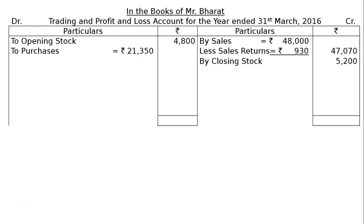Here we go to adjustment six: during the year, machinery was purchased for Rs. 2,000 but it was debited to purchases account. Hence from purchases we have to deduct machinery, and we have to add machinery in the balance sheet to the machinery balance already appearing in the trial balance. Then out of that total, we have to calculate depreciation and deduct from the new figure of machinery.